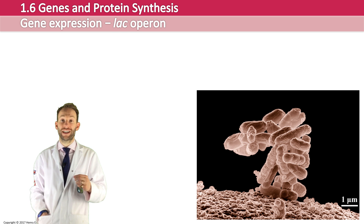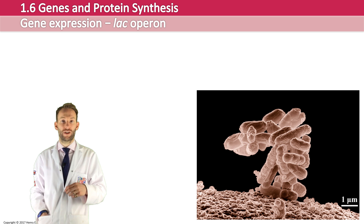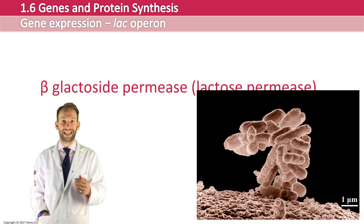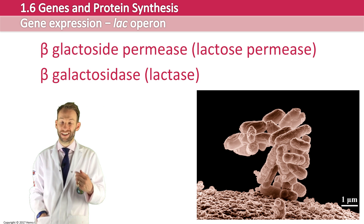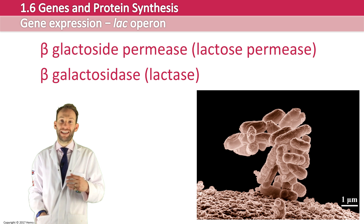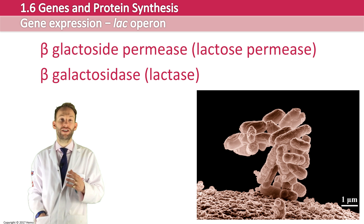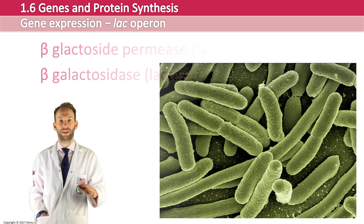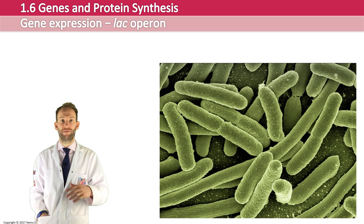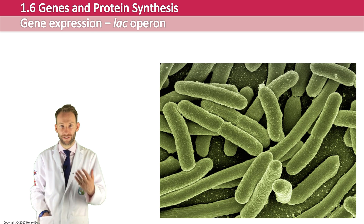For E. coli to digest and absorb lactose, it needs to make two enzymes — one called beta-galactoside permease, another one called beta-galactosidase. However, if a bacterium is living on glucose, then the genes required to make those enzymes are switched off. It doesn't need them. It's got glucose, it's got its substrate.